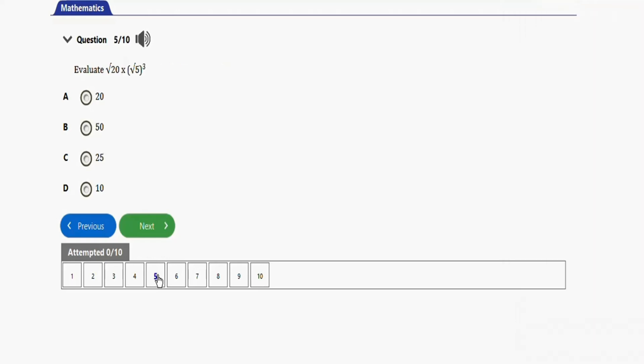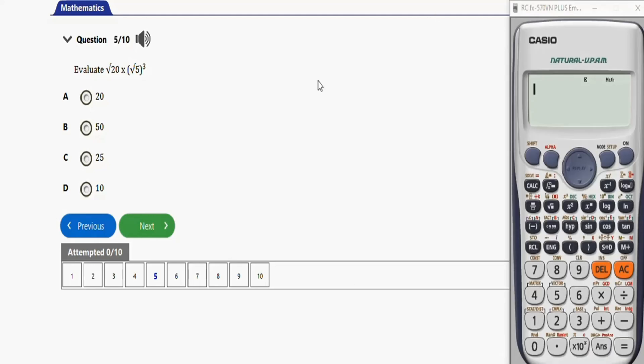Let's solve question two. Next question, it says evaluate √20 times (√5)³. The calculator should be able to solve this. We have √20, then in brackets √5 close the brackets to the power three. Let's press equal: 50. So the right option is option B.